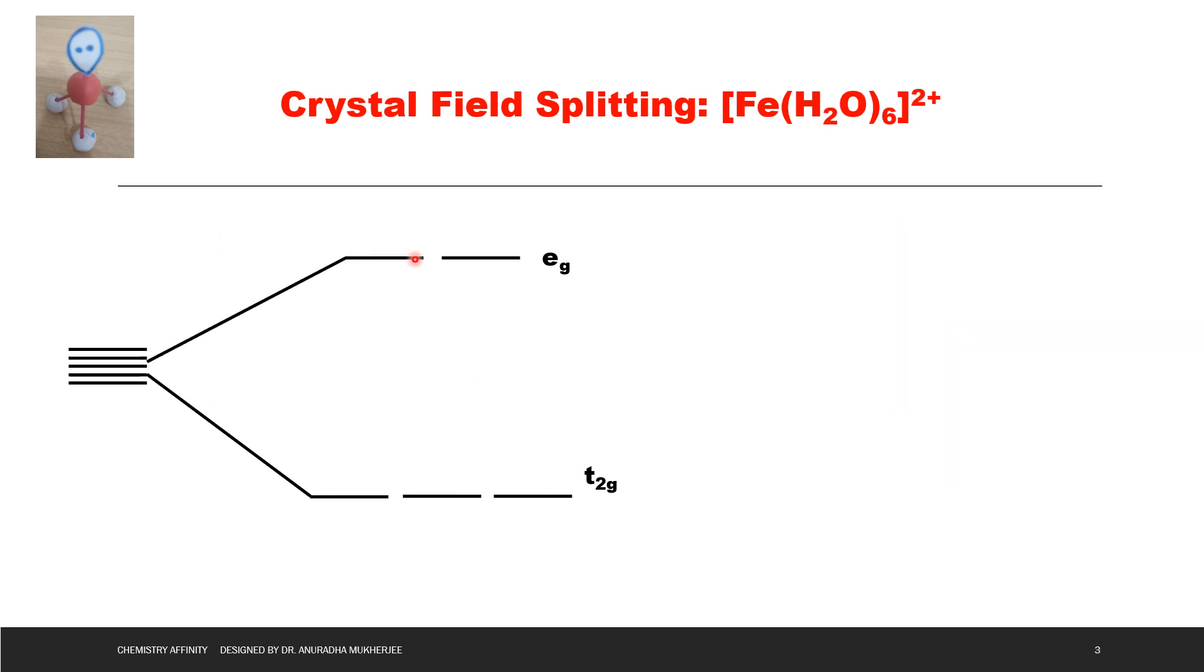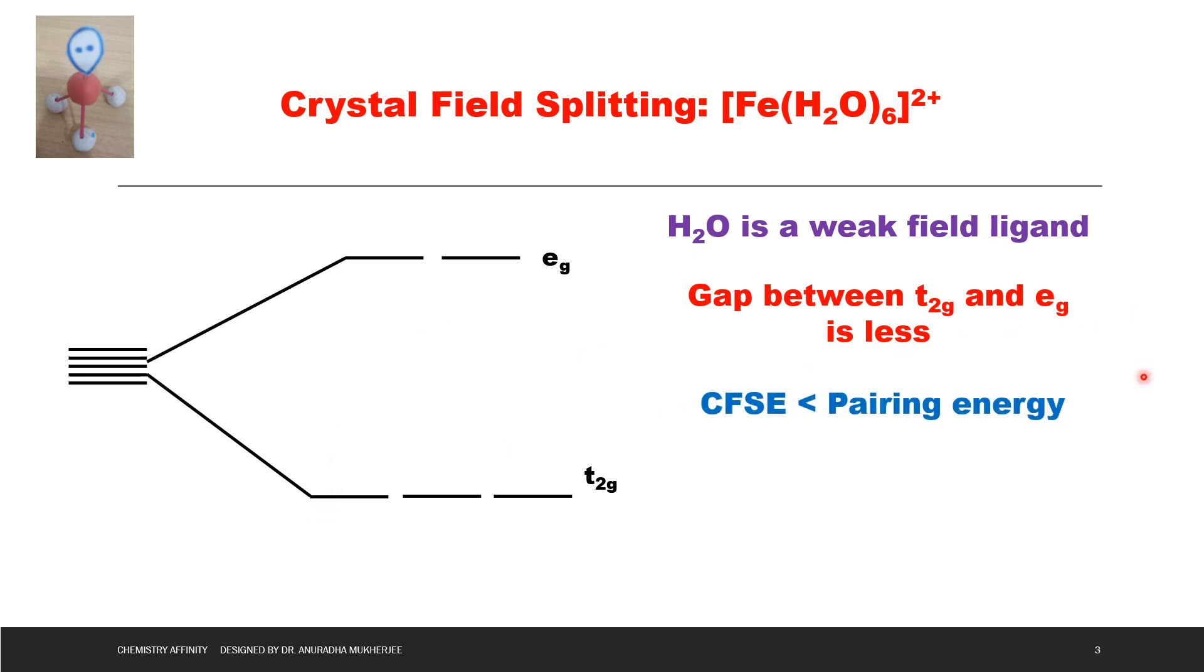Next we have to check the crystal field splitting of Fe(H2O)6 2+. Here water is a weak field ligand, so gap between T2G and EG is less. That means crystal field stabilization energy is less than pairing energy. And here we are getting high spin complex, that is T2G4, EG2.